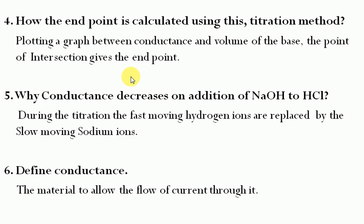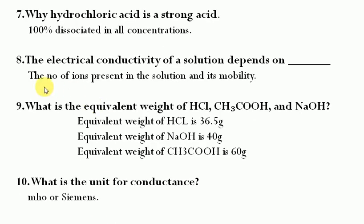What is meant by conductance? Conductance is the ability of a material to allow the flow of current through it. The flow of electrons and ions allows current to move, and this property is called the conductance of the material. Why is HCl a strong acid? Because HCl dissociates 100% in solvent into H⁺ and Cl⁻ ions. Electrical conductivity depends on the number of ions in the solution and their mobility or migration.